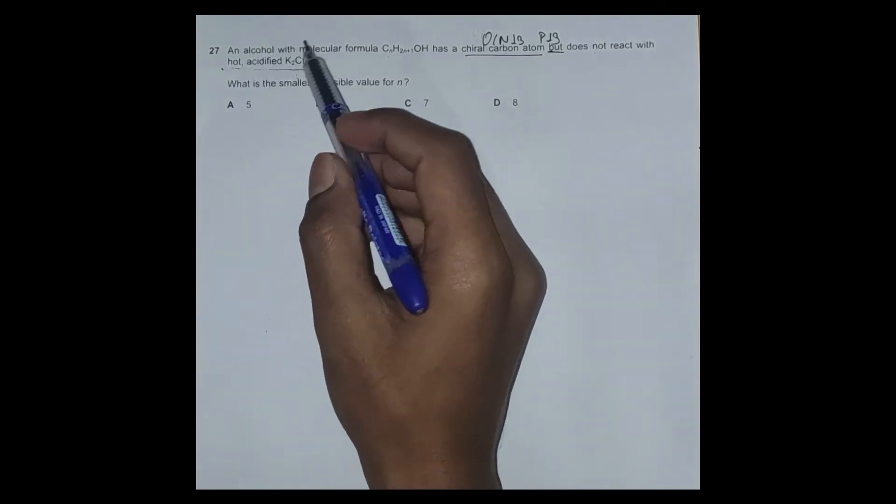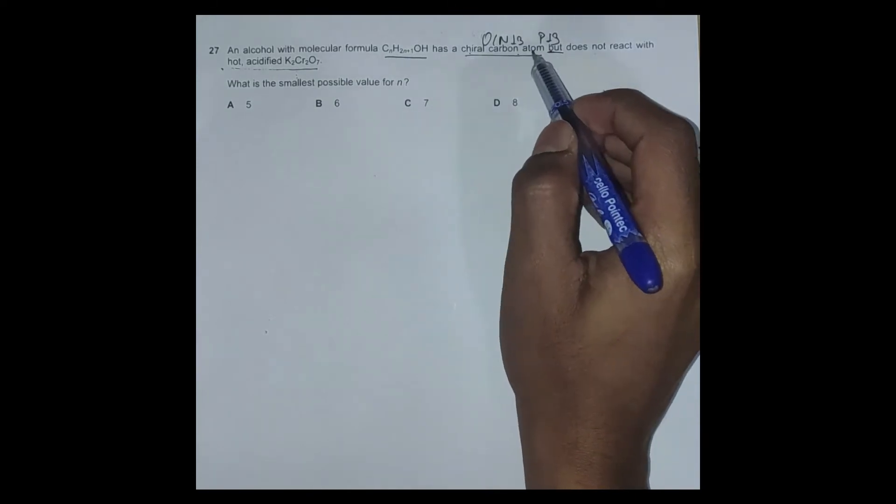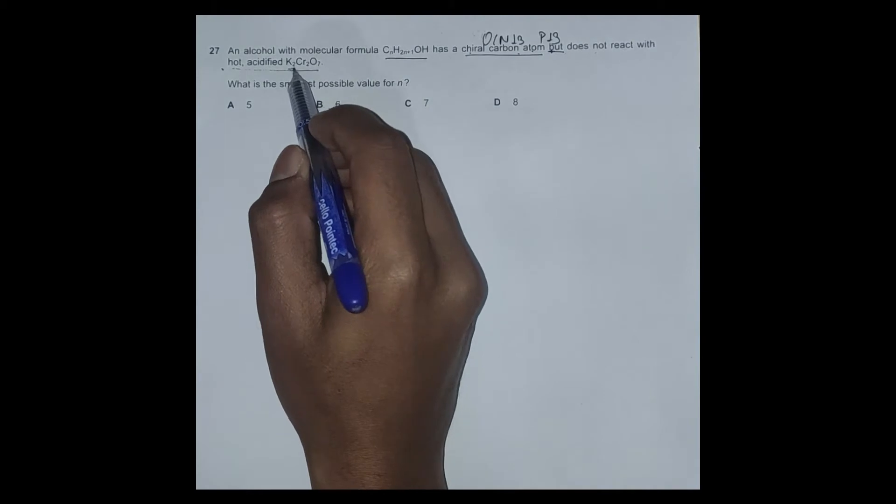The question reads: an alcohol with molecular formula CnH2n+1OH has a chiral carbon atom but does not react with hot acidified K2Cr2O7.